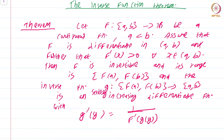You have a continuous function from closed interval [a, b] to ℝ. We are assuming that f is differentiable on the open interval (a, b) and further that the derivative is greater than 0 at all points. We already know that under these hypotheses the function f will be strictly increasing. We have already shown in an earlier module that f is invertible, and not only that, we have shown that the inverse is a continuous function. The key assertion is that this inverse is differentiable and you have a formula for the derivative of the inverse.